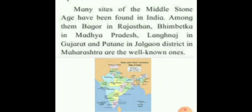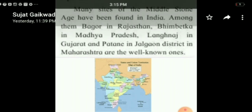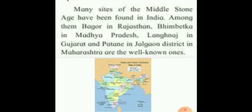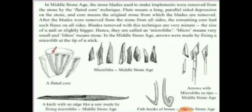Many sites of the middle stone age have been found in India. Among them, Bagor in Rajasthan, Bhimbetka in Madhya Pradesh, Langhnaj in Gujarat, and Patne in Jalgaon district in Maharashtra are the well-known ones. Well-known means famous. In the middle stone age, the stone plates used to make implements were removed from stones by the fluted core technique.